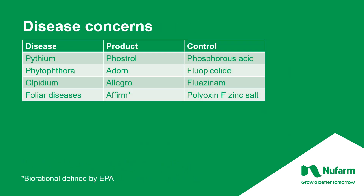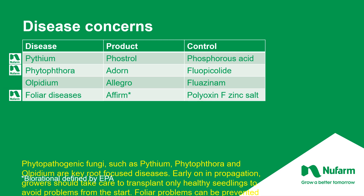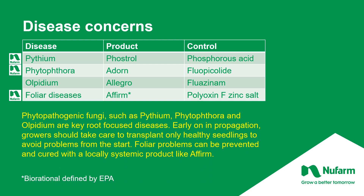Disease concerns focus on the root zone since roots are continuously bathed in a wash of water. Starting with propagation, as the plugs develop, a prophylactic application of listed fungicides can be used to prevent disease development. Because we are working in aquaculture, the possibility of transmitting any disease through the irrigation systems is high.